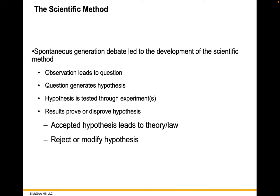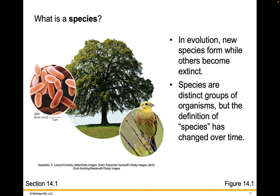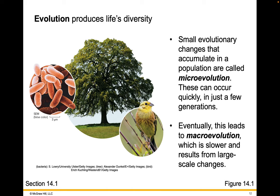Now that we know living cells only arise from other living cells, let's talk about how those cells become different species. In evolution, new species form and species can also become extinct. Species are distinct groups of organisms, but the definition of species has changed over time. Small evolutionary changes that accumulate in a population are called microevolution, which can occur quickly in just a few generations. Eventually, this leads to macroevolution, which is slower and results from larger-scale changes.